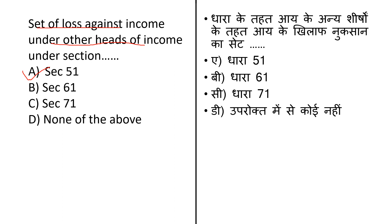Second option is Section 61. Section 61 is divided into three subsections. The proper officer may scrutinize the return and related particulars furnished by the registered person to verify the correctness of the return and inform him of any discrepancy notice, and seek his explanation.